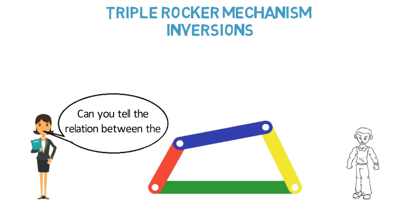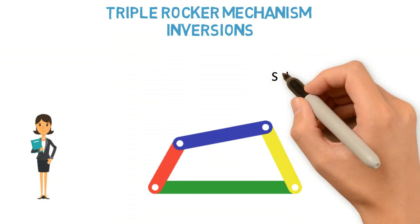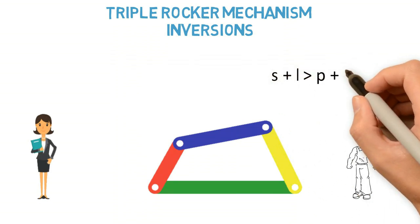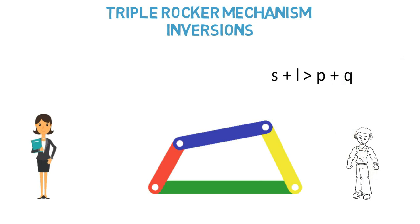Consider this linkage. Can you tell the relation between the lengths of the links? Yes, for this linkage to be triple rocker mechanism. Yes, the sum of the lengths of the shortest link and the largest link should be greater than the sum of the lengths of the other two links. Now let's see its inversions.